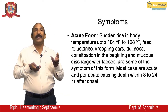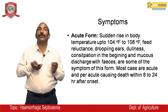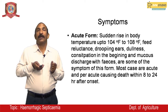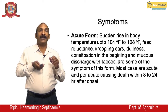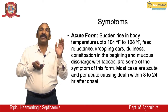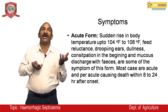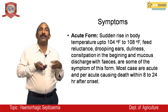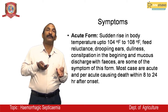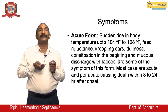Symptoms of the peracute form include a sudden rise in body temperature up to 104°F to 108°F, fever, reluctance, dropping ears, dullness, constipation in the beginning, and mucus discharge with the feces. Most cases are acute and peracute, causing death within 8 to 25 hours after onset.